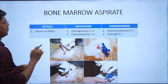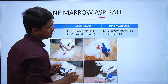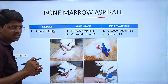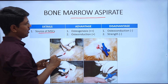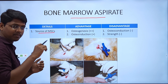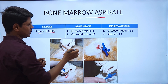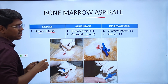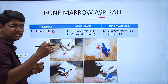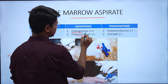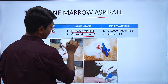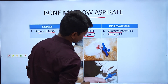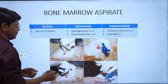Next is bone marrow aspirate. This is basically a source of mesenchymal stem cells (MSCs). It has some factors that can induce chemotaxis, so it will have some osteoinduction property. Since MSCs can act as osteoblasts, there will also be osteogenesis property — good osteogenesis and fair osteoinduction. It does not have any osteoconduction property and has no strength.